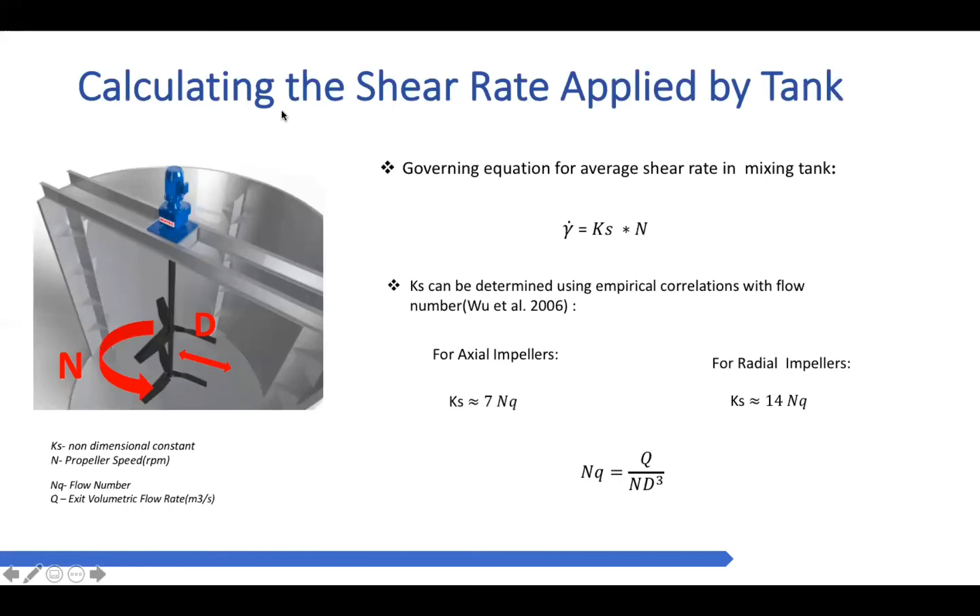So now the question really is, how do we be able to calculate the shear rate applied by a tank? Well, from numerous studies conducted by researchers, the shear applied by an agitator appears to be as a function of the blade's slash propeller's geometry, its diameter, along with its rotational speed. So as such, there exists a direct proportionality between the average shear rate and the rotational speed, with a proportional constant referred to as a Ks value.